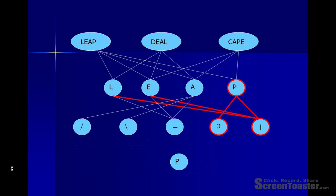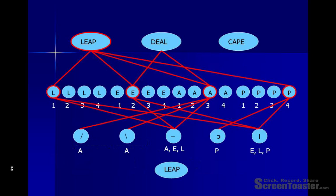How about word recognition? Now we need to take into account positional information. The model shown on the screen here is an extended version of what we previously saw. Let's suppose that a person is presented with the word 'leap.' Again, particular feature units become activated and they pass their activation on to the letter units, but now the letter units are taking into account positional information.